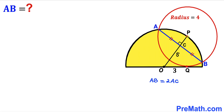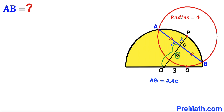Our task is now to find AC. Let me label PC as x and AC as y. Since the radius OP is 5 units, segment OC is going to be 5 minus x.